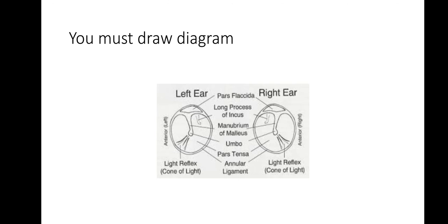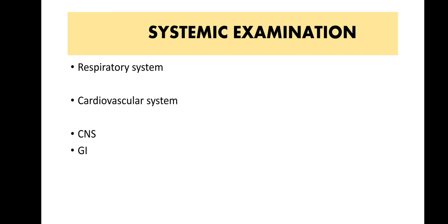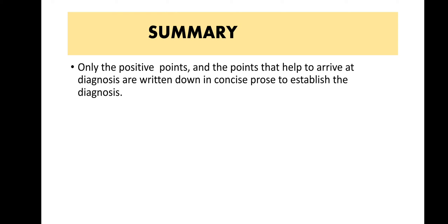Draw the picture of both left and right tympanic membranes, showing the perforation wherever it is present. A picture is meaningless without labels, so label all parts. Then write down the examination of the nose and throat, and perform systemic examinations — these are frequently omitted, which irritates the examiner. In the summary, write only the positive and important points that help establish your diagnosis, followed by the provisional diagnosis.